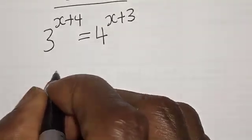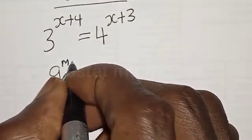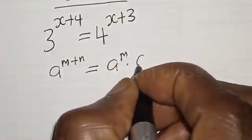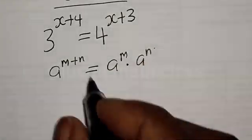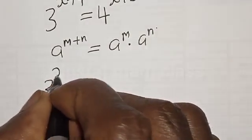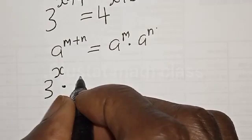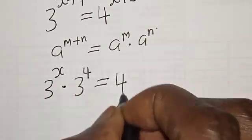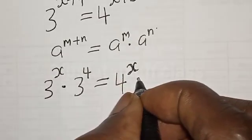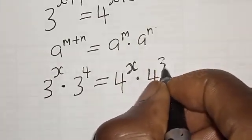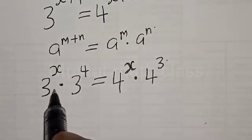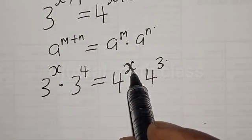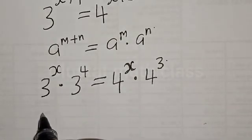Remember, if you have L raised to power m plus n, it is the same thing as L raised to power m multiplied by L raised to power n. Then we have 3 raised to power x multiplied by 3 raised to power 4 on the left-hand side, and the right-hand side is 4 raised to power x multiplied by 4 raised to power 3.